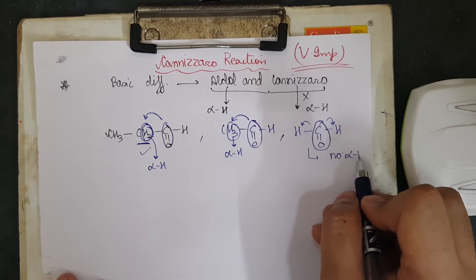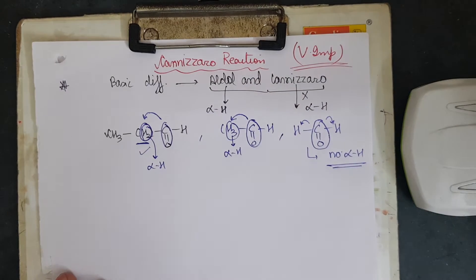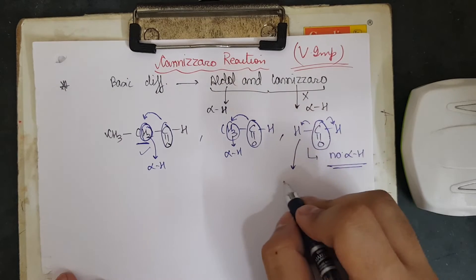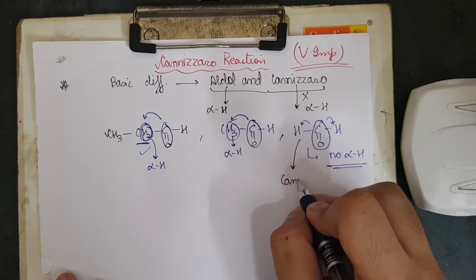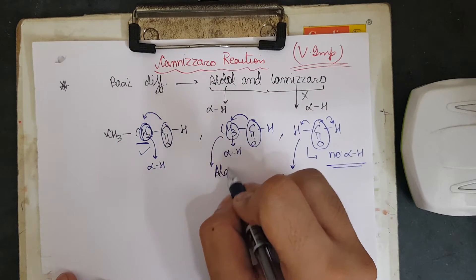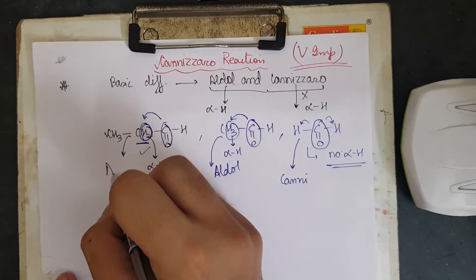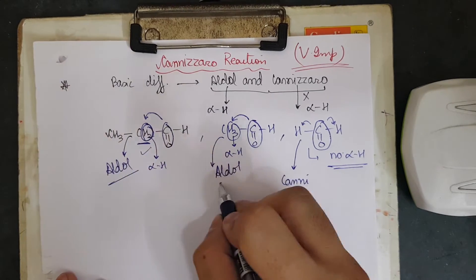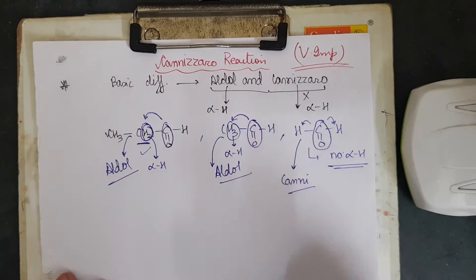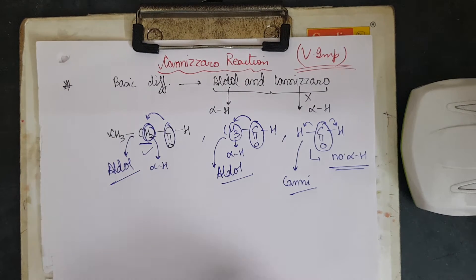However, if we have HCHO, we have a carbonyl group with no carbon on either side, so there is no alpha hydrogen. This compound will give the Cannizzaro reaction, while CH₃CH₂CHO and CH₃CHO will give the aldol reaction. This is the basic difference between aldol and Cannizzaro reaction — whether alpha hydrogen is present or not.